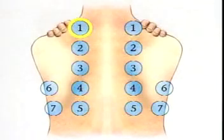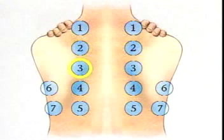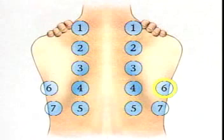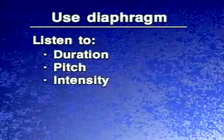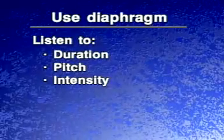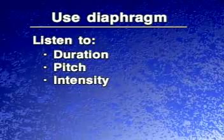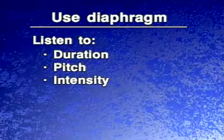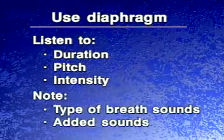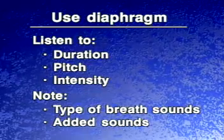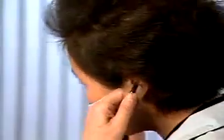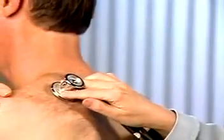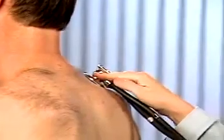To auscultate the posterior thorax, begin at the apices and proceed downward, moving systematically from side to side and comparing the sounds in symmetrical areas. Using the diaphragm of the stethoscope, listen to at least one entire breathing cycle at each location. Listen to the duration, pitch, and intensity of the inspiratory and expiratory sounds, decide what type of breath sounds you're hearing, and note any added sounds. During auscultation, have the patient breathe deeply through his mouth. If the patient becomes uncomfortable, allow a rest period.